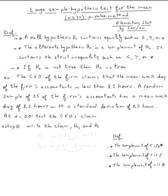Step one: we always write the claim, the null hypothesis h sub zero, and the alternate hypothesis. We start always with the claim. The CEO claims the mean workday is less than 8.5. So I write the claim: mu is less than 8.5. This is the claim.